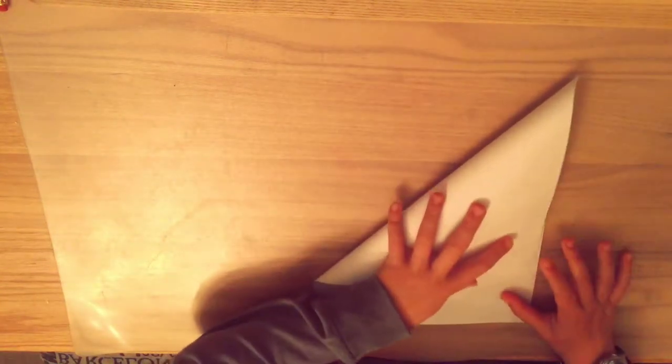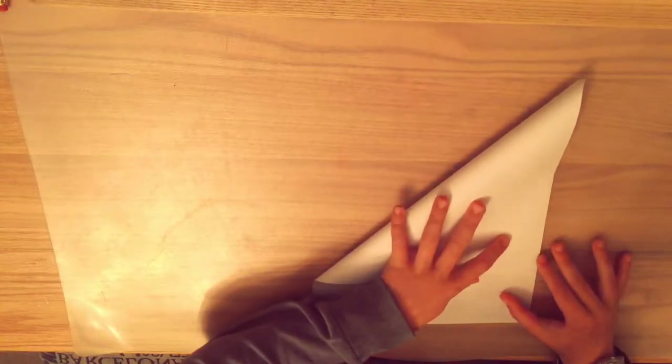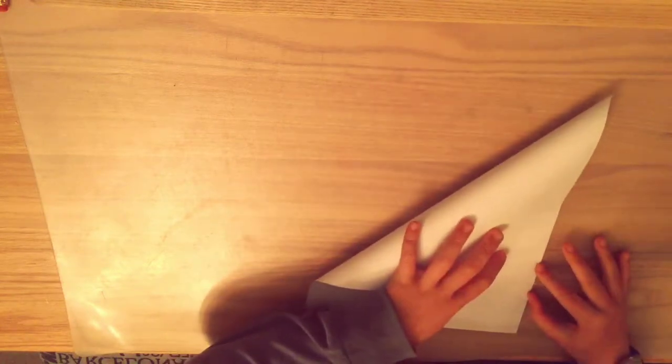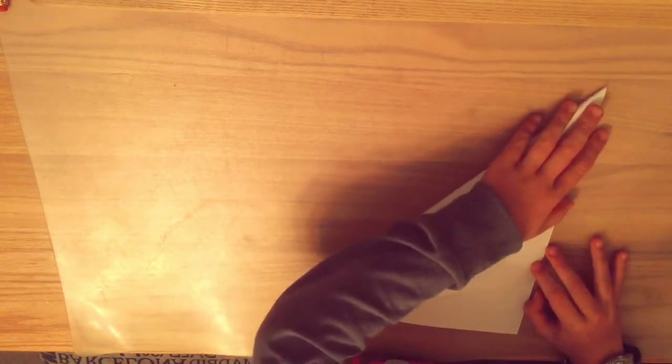So we're going to start with the same two steps we did with the ninja. We're going to fold it down, take one corner and fold it down. You want that top to be a point.